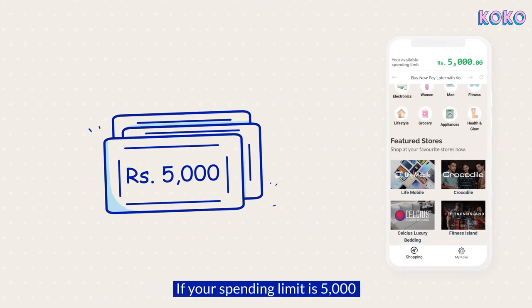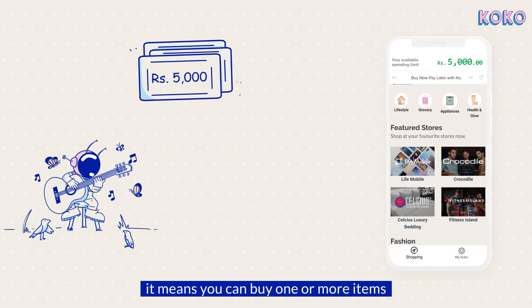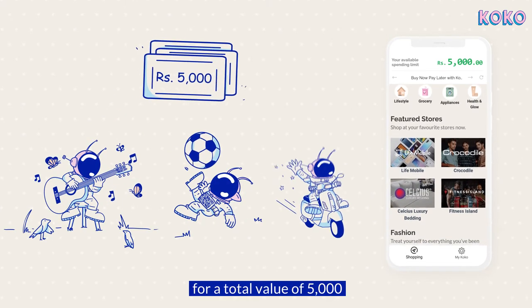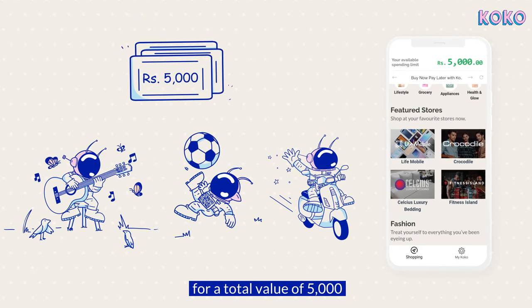If your spending limit is $5,000, it means you can buy one or more items for a total value of $5,000.